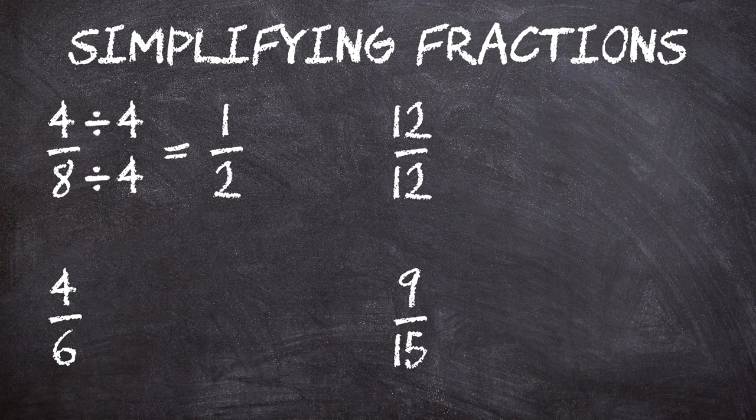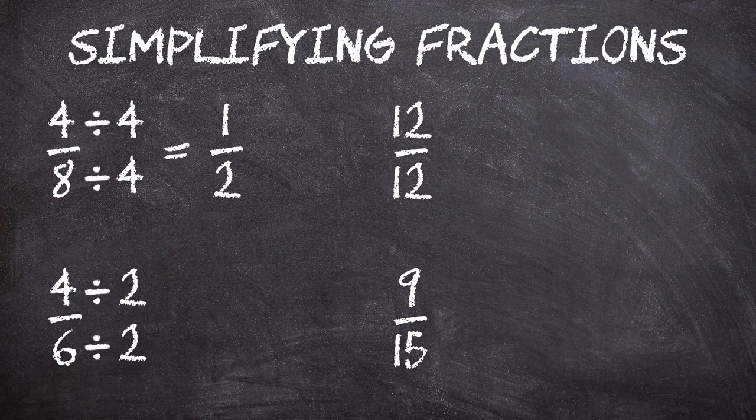With the second one, four over six, or four-sixths, we can divide top and bottom by two. We can't divide by four, as four does not go into six evenly. So dividing by two gives us two over three, or two-thirds.